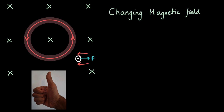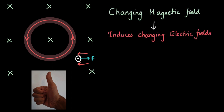So here's the big idea: a changing magnetic field induces changing electric fields. The electric field you see here is not stuck in space — they constantly disappear and reappear, which is why we say changing electric fields.